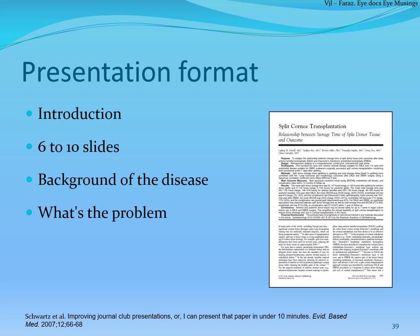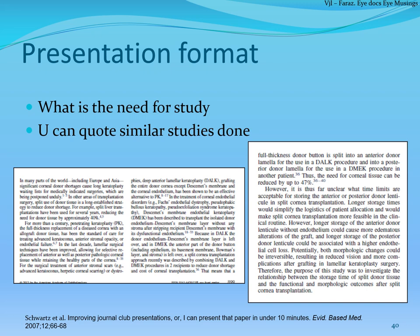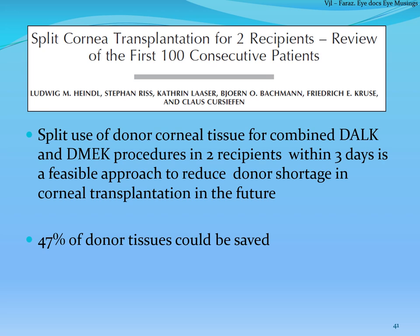Explain why there is a need for split cornea transplantation — there are many cornea-blind people and not enough tissues, so using one tissue for two patients is the highlight of why this study was done. Always make your presentation look like a story. If you read the introduction carefully, the authors will cite similar studies done on the same topic by different authors at different centers — those studies must be cited. Present an example of a similar study on the same topic and its inferences.